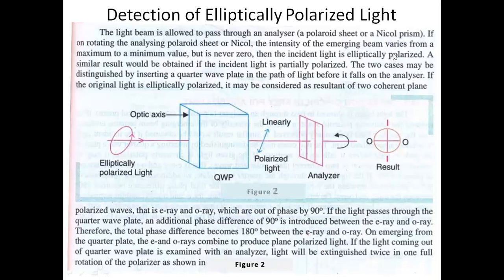When you use the analyzer to study the elliptically polarized light, this light is allowed to pass through the analyzer and you rotate it. The intensity of the emerging beam varies from a maximum to minimum, but it is never zero. However, the same result can be obtained for partially polarized light also. So we need to distinguish between these two cases — elliptically polarized light and partially polarized light.